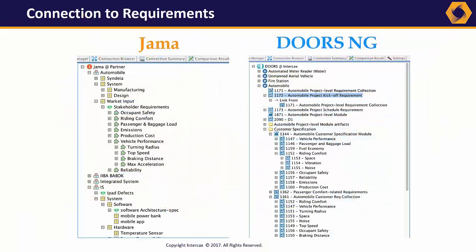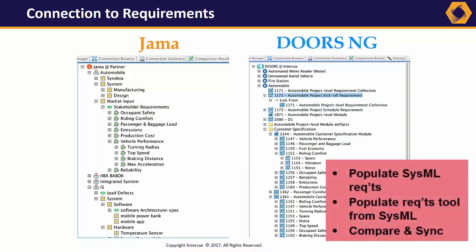Requirements management is a critical part of systems engineering. Cyndia can link any SysML element to a requirement, or a specific version of a requirement, in DOORS NG or JAMA. Or it can generate and update a copy of that requirement in the SysML model, making it easier to relate that requirement to the structure, behavior, and analysis elements that it affects.